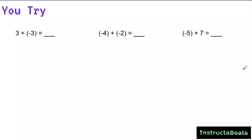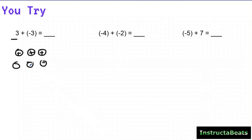Hopefully you just paused and now you're checking this out — have your work in front of you and check it as I do it. I'm going to start with three positives, and I'm going to add three negatives to that. I canceled all of these out and had nothing left over. So three plus negative three would be zero — three and the opposite of three, which is negative three, make a zero.